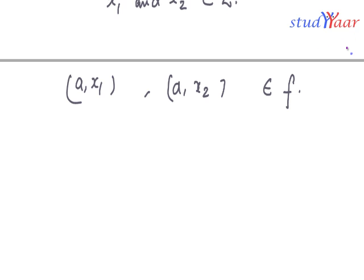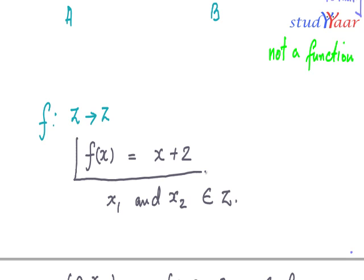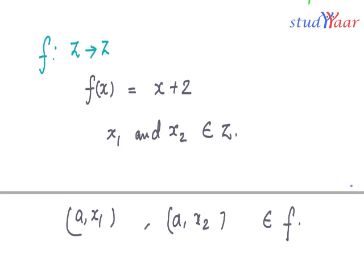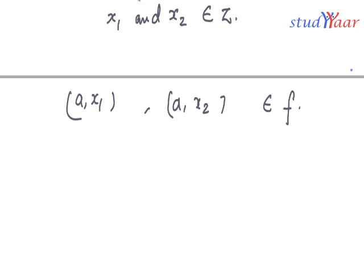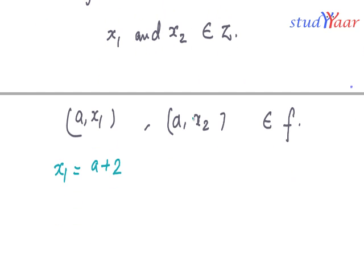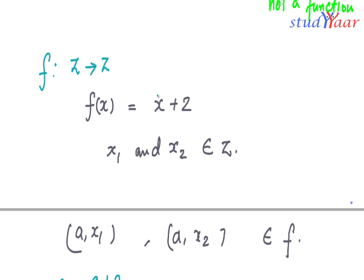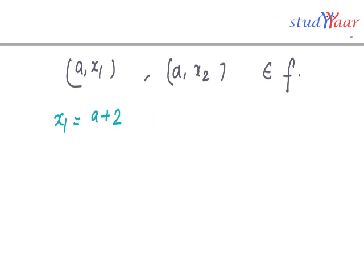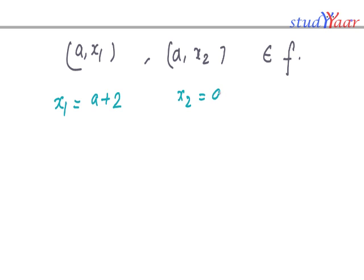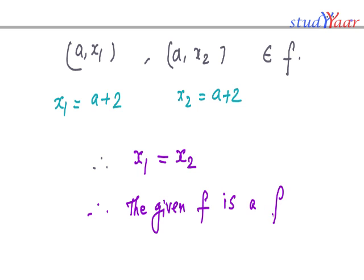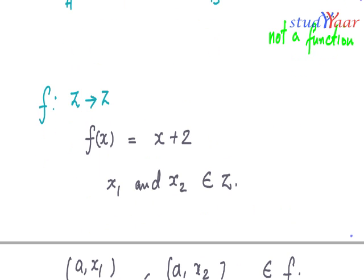Let us try to prove that. As per the given function, x1 is going to be a + 2, and x2 is also going to be a + 2. Therefore x1 = x2, and therefore the given f is a function. That is the way you prove that a given relation is actually a function.